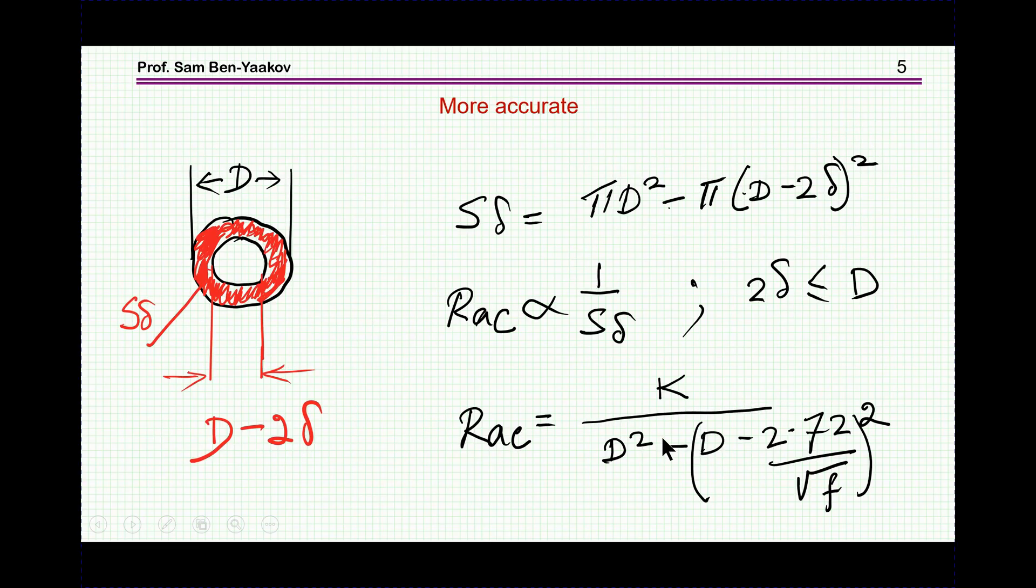Now, there is a more accurate way to estimate the RAC, and that will be to actually calculate more accurately this area here, this belt here. And this will be done by taking the total area, and subtracting from it this inner circle here, inner area, the diameter of which is D minus 2 delta, because we have delta here and delta here, so this is D minus 2 delta.